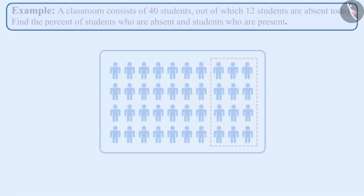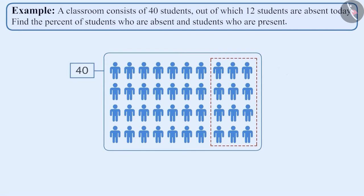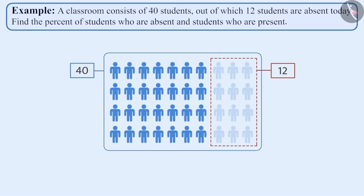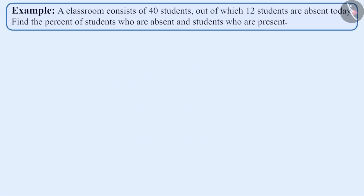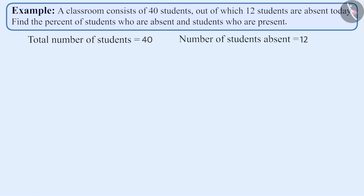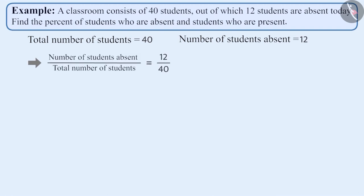A classroom consists of 40 students, out of which 12 students are absent today. Find the percentage of students who are absent and students who are present. The total number of students in the class is 40, and the number of students absent is 12. Therefore, the number of students absent comprises 12 by 40 part of the total number of students.